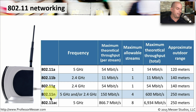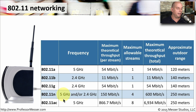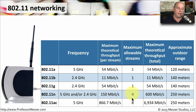A newer standard, 802.11n, allows the use of both 5 gigahertz and 2.4 gigahertz frequencies. It supports four streams and provides a total theoretical maximum throughput of 600 megabits per second.